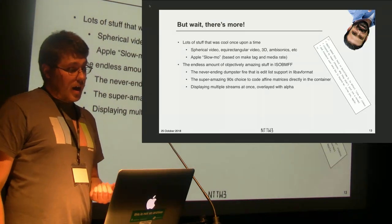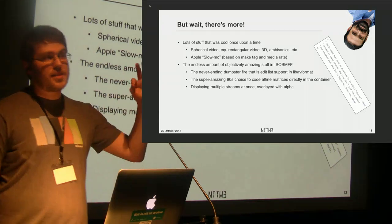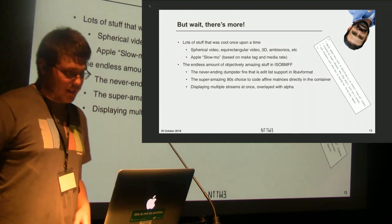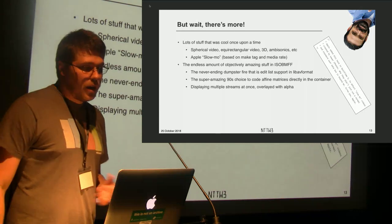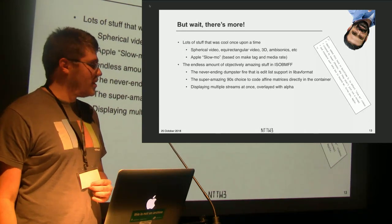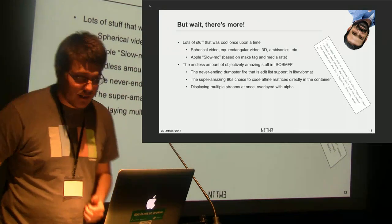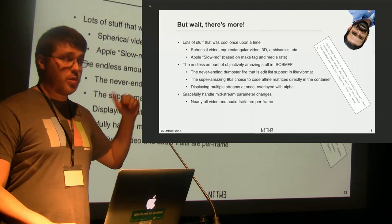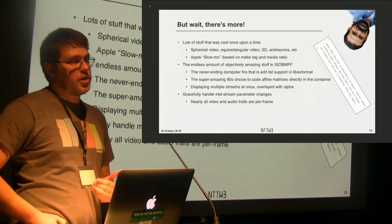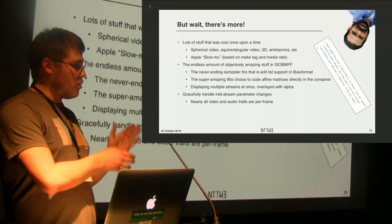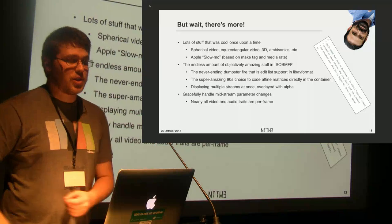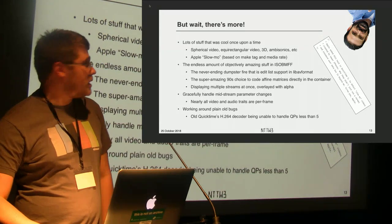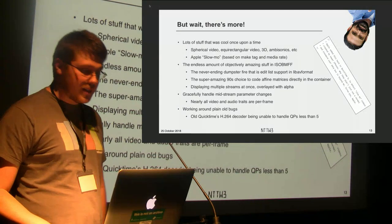I'd really like to meet the person who decided that instead of storing rotation as a simple flag, MP4 should store the full affine matrix so you can shove it right into a shader. Nobody wants to write matrix code, so instead they try to fudge it and just read the top-left value to infer rotation. MP4 can also have multiple streams — one could have alpha, and you have to detect and overlay that. Midstream parameter changes are also a thing; there's no stream-wide value, everything is per-frame. And old QuickTime can't handle QPs less than 5 in H.264 — the most arbitrary bug, but it's still there.